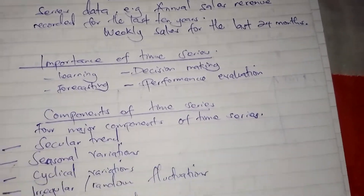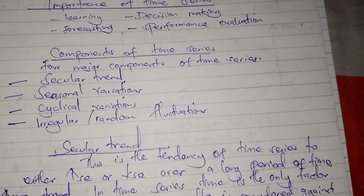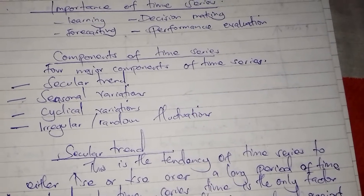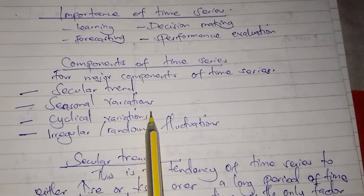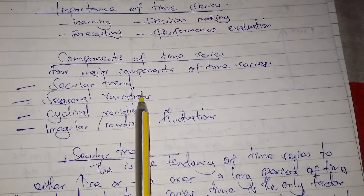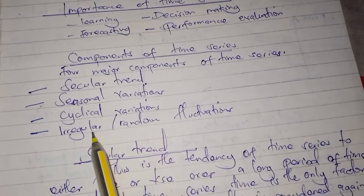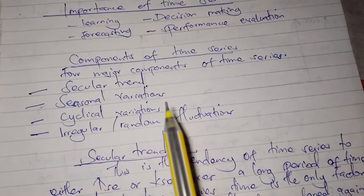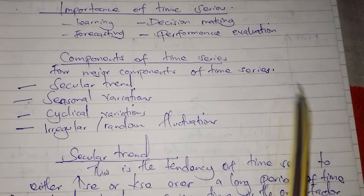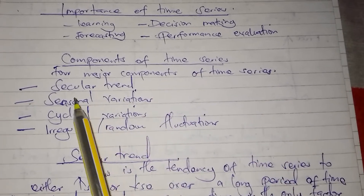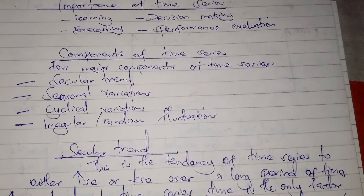Now we are going to look at the components of time series. Time series has mainly four components: the secular trend, seasonal variations, cyclical variations, and irregular or random fluctuations. We are going to look at each one of them in detail.